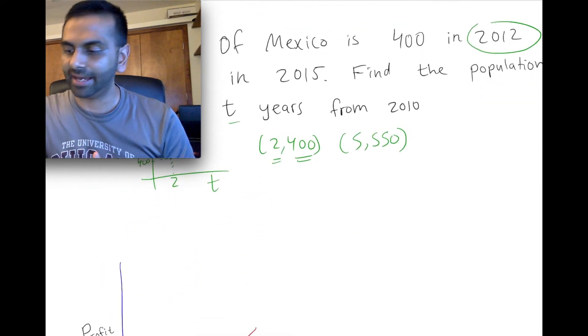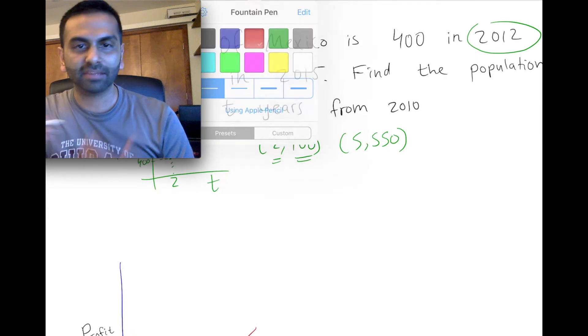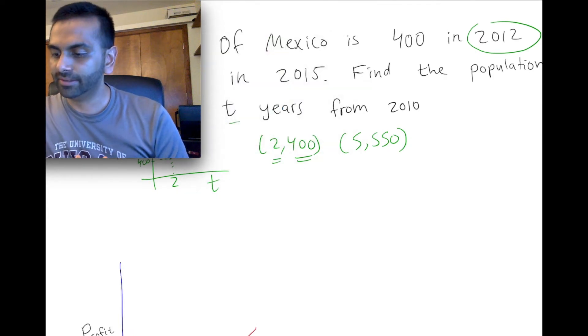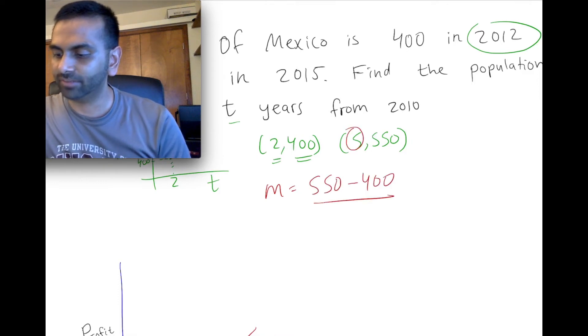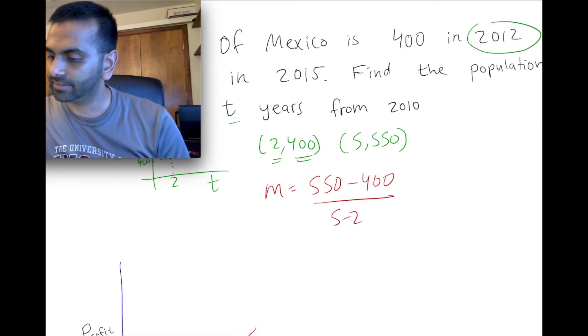And so now I just want to find an MX plus B out of that. Well, let's use our mathematical tools, rise over run. So the slope M is 550 minus 400. That's just going to be 550 minus 400 over X2 minus X1, 5 minus 2. So that's going to be 150 over 3, which is 50.